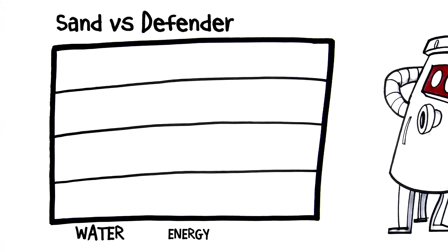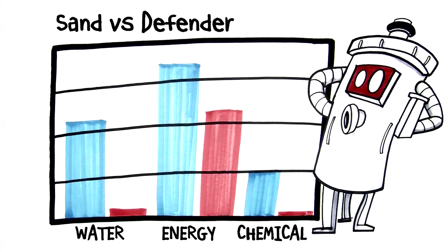The combination of water, energy and chemical savings really adds up. In this example, annual operating costs for a pool with a sand filter are more than 2.5 times the cost of using Defender.